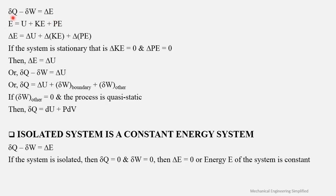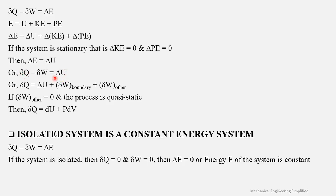From the first law, δQ − δW = δE. The total energy E comprises internal energy, kinetic energy, and potential energy. Note that the kinetic and potential energies referred to here are the bulk kinetic energy and bulk potential energy of the whole system — not the molecular kinetic energy inside. If the system is stationary, δKE = 0 and δPE = 0, so δE = δU, and the first law becomes δQ − δW = δU.